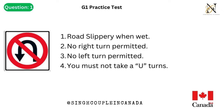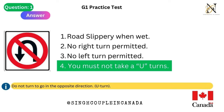Question 1. This traffic sign means: 1. Road slippery when wet. 2. No right turn permitted. 3. No left turn permitted. 4. You must not take a U-turn. Answer is 4. You must not take a U-turn — do not turn to go in the opposite direction.